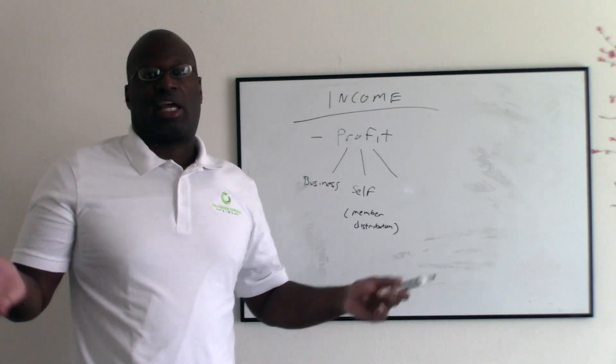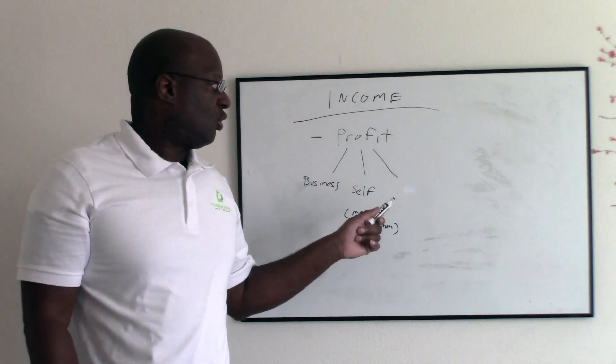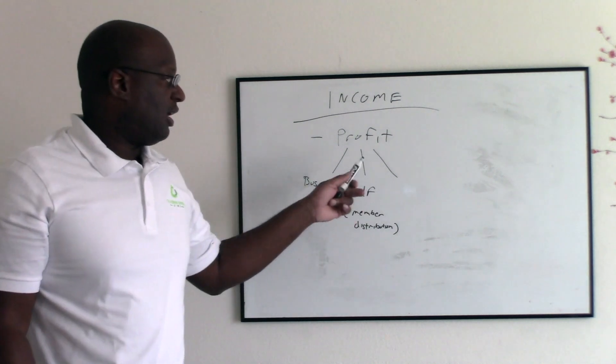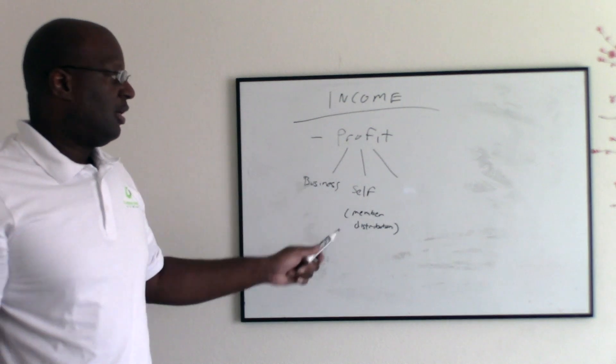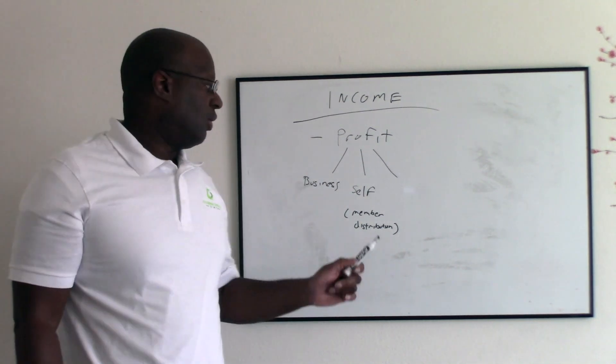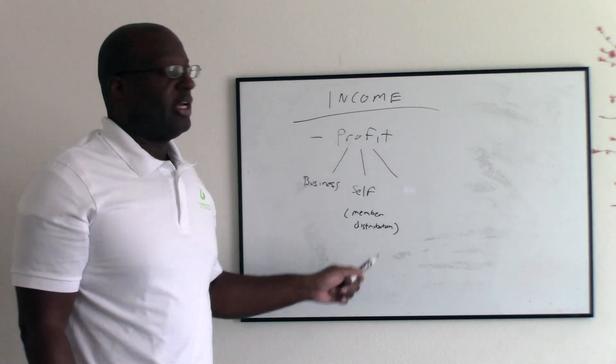You're going to write a check to yourself and in the memo portion, it's going to say member distribution. So that money is like your payment. And that's if it's just you doing this by yourself, that's a way to cover your income.